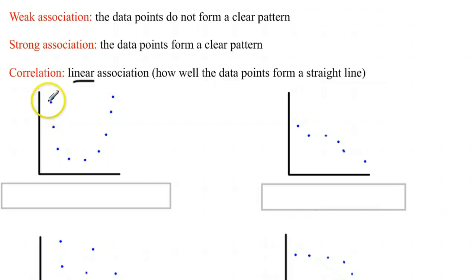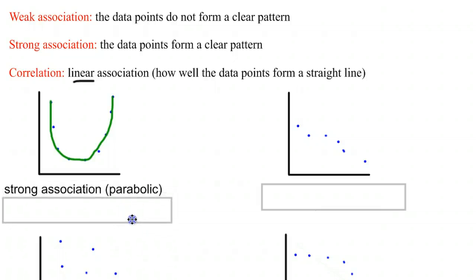So in this first pattern here, you'll see that these dots clearly form a distinct pattern, but it is not a line, meaning that they would have strong association in the shape of a parabola, but it would have weak correlation, because it's hard to fit a straight line to this data. If you try to fit a straight line to this data, it would probably look something like that.